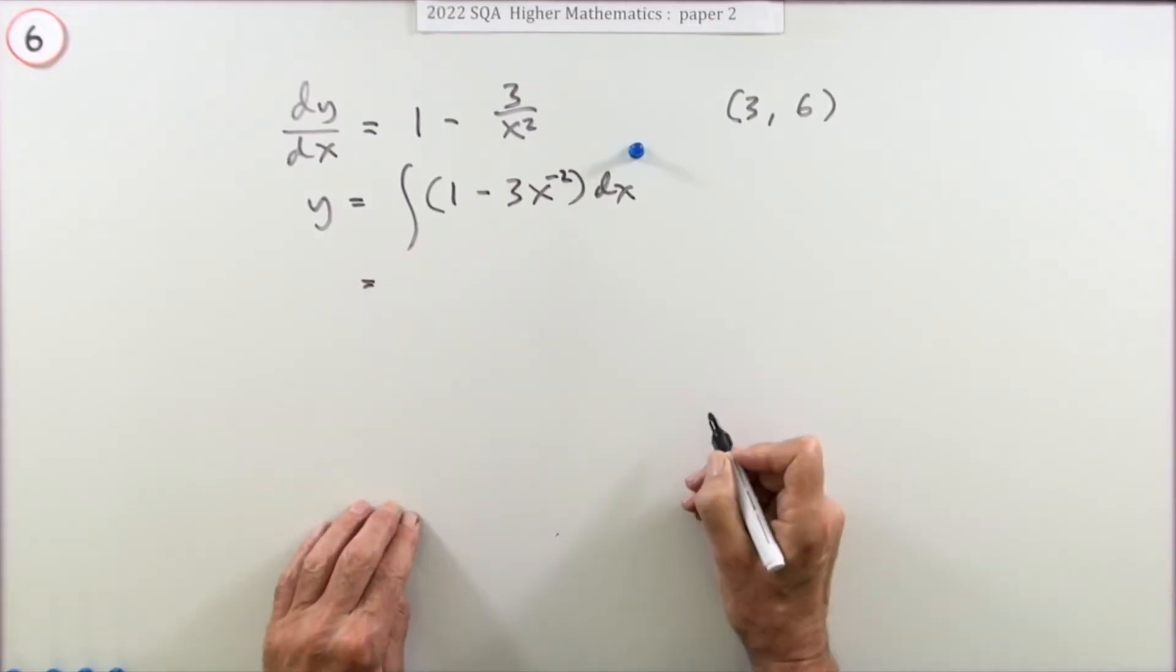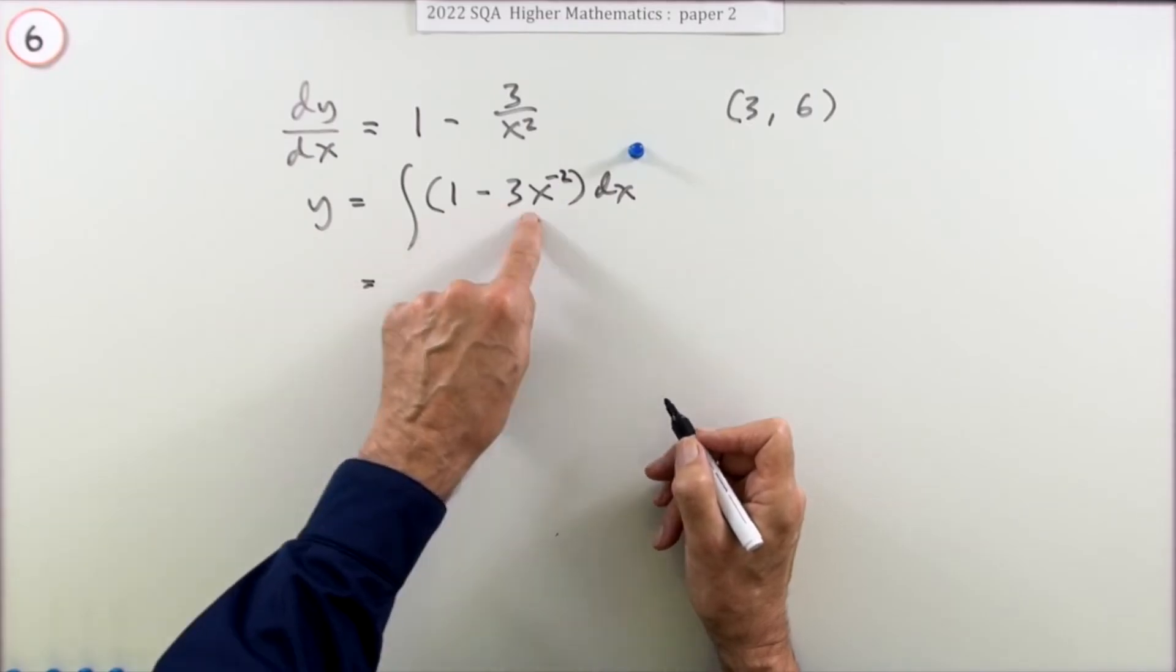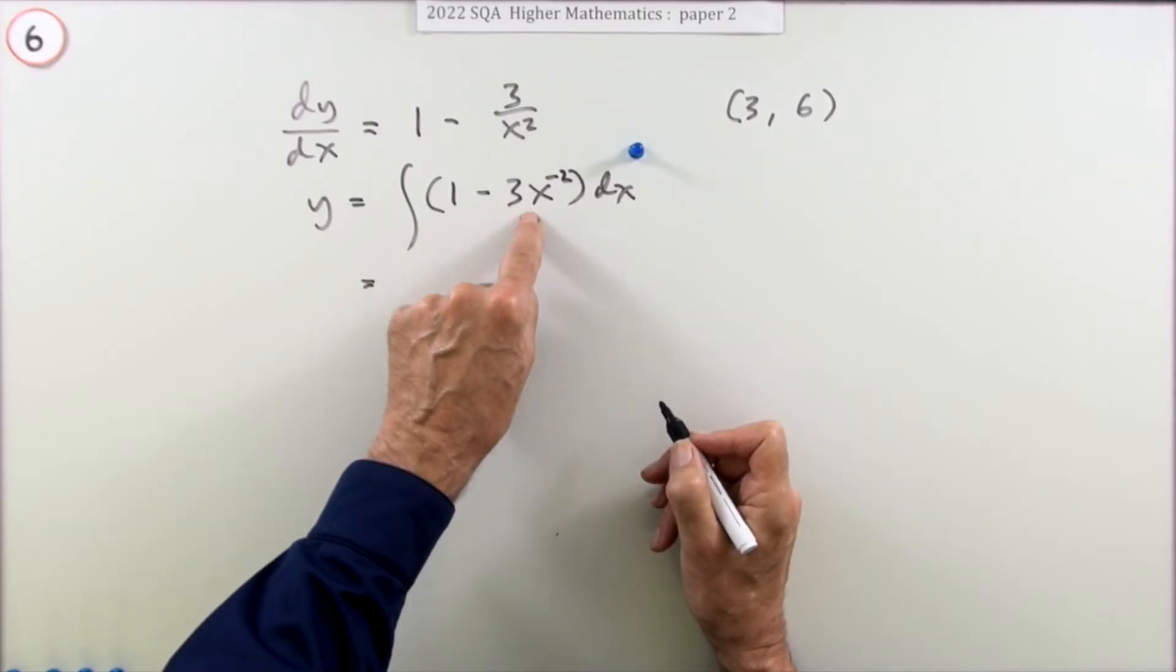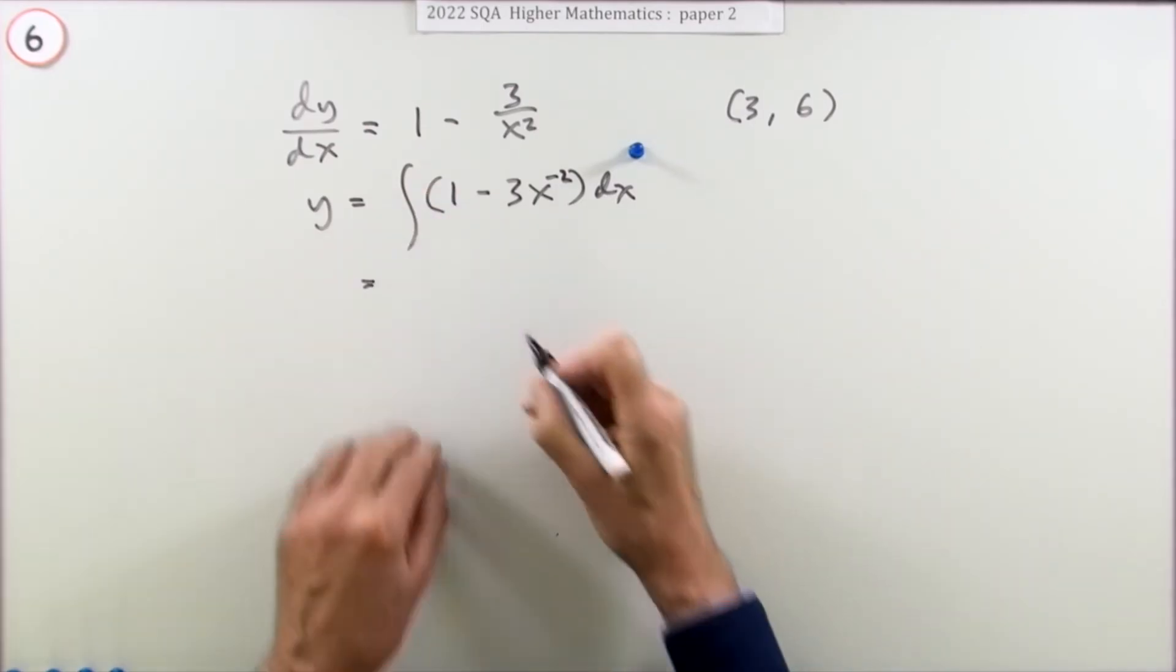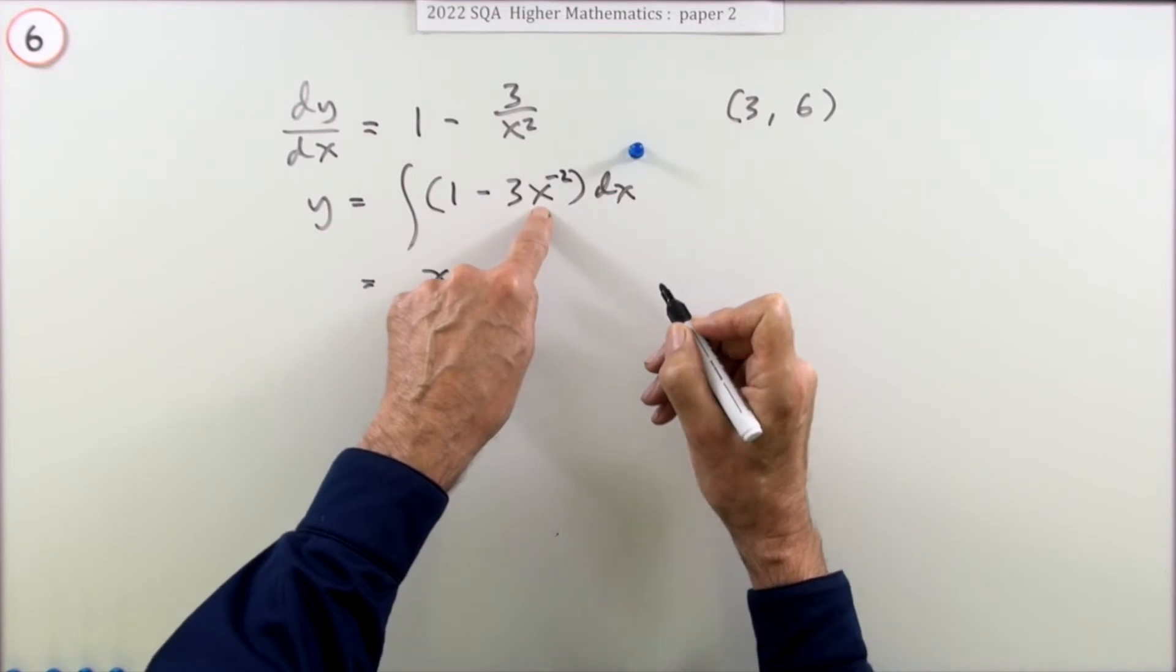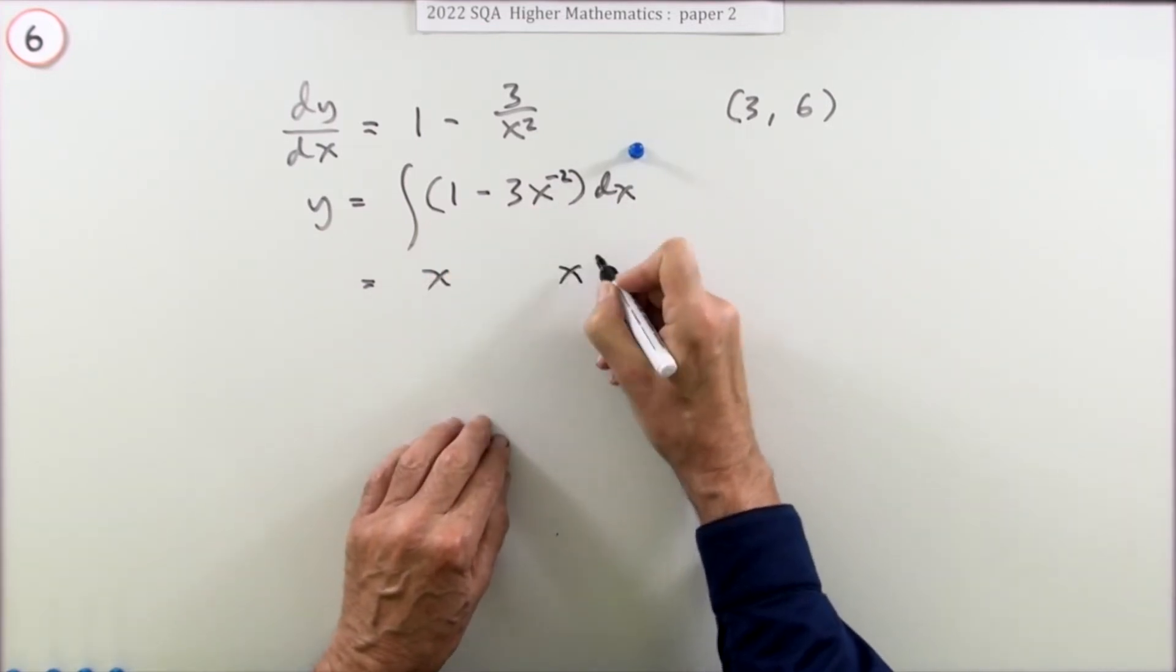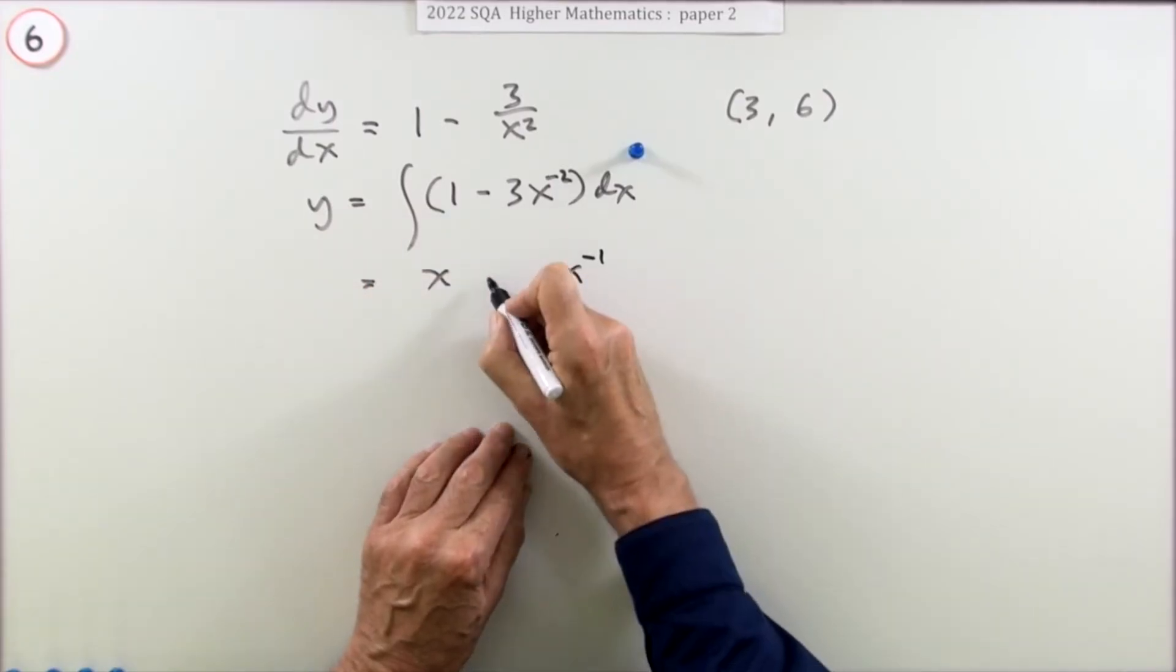Now carry out the integration. And there's two marks for this. There'll be one mark for that term, one mark for that term. Probably one mark for that term and the other mark for that term plus the constant that will pop out. Well, 1 will pop back up to x. x to the negative 2 will pop back up to x to the negative 1. Divide by that negative 1, so that makes that a plus 3.